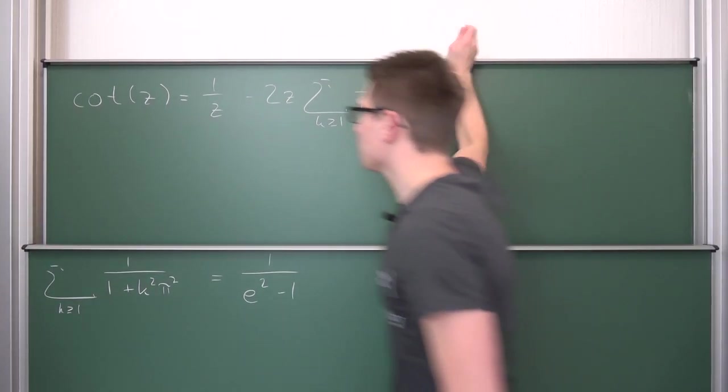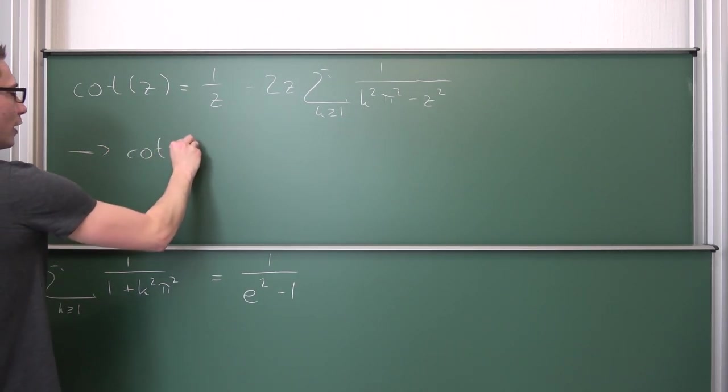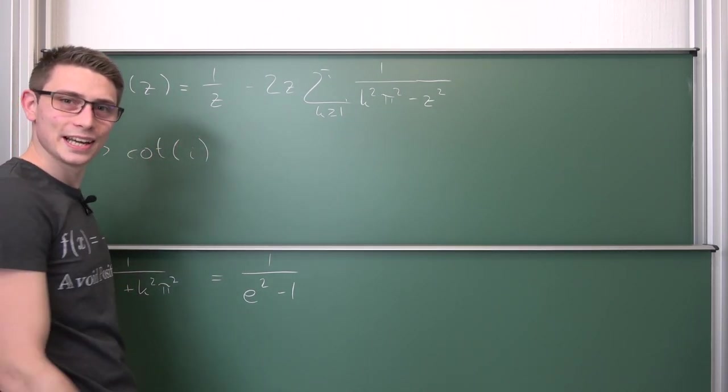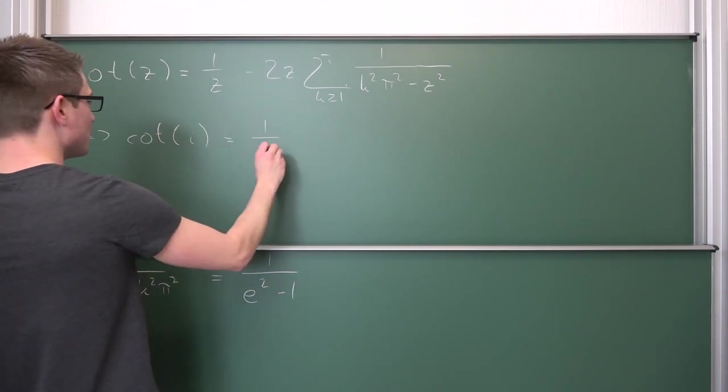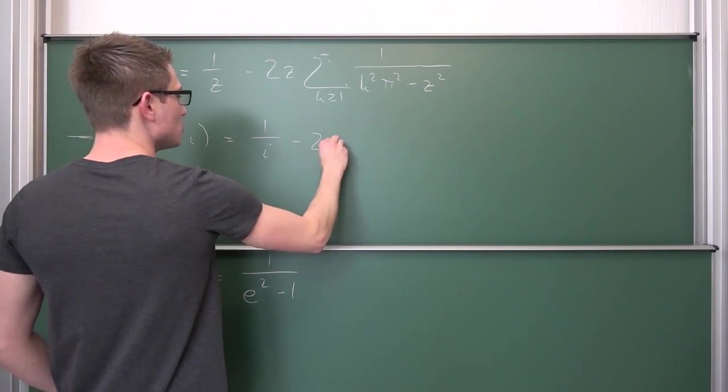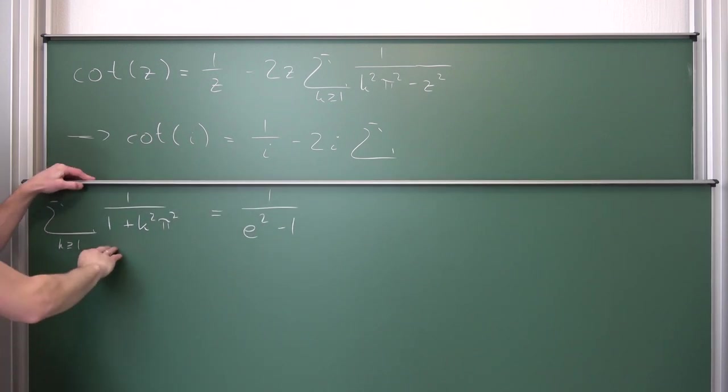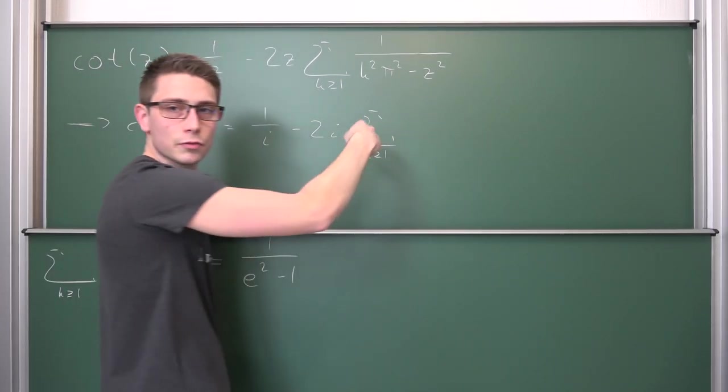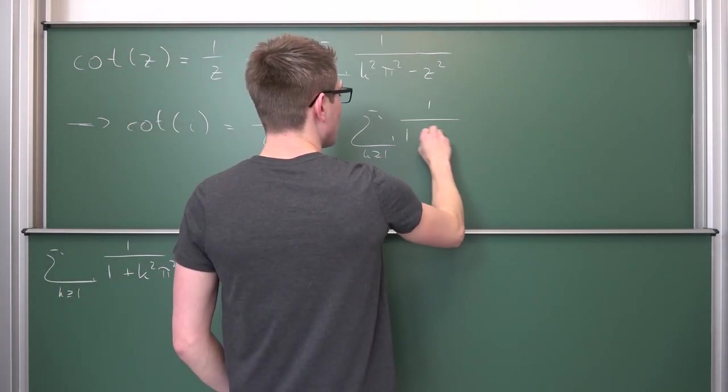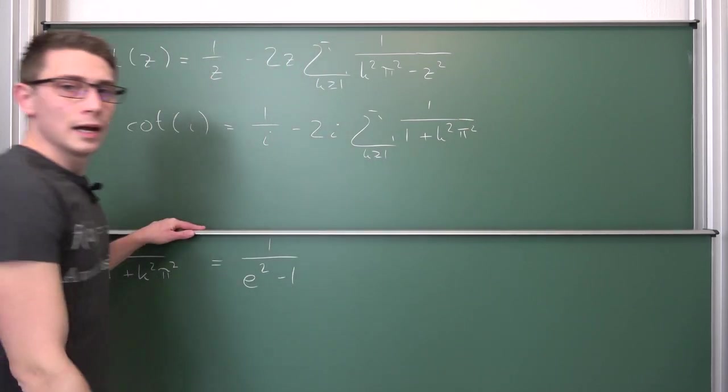So let us do this as a little implication. The cotangent of i, this is already quite a nice fact, can be expressed as an infinite series namely by 1 over i minus 2 times i times the infinity boy that we are seeking. K being greater or equal to 1 and then negative 1 times negative 1 is positive, so 1 over 1 plus k squared π squared.